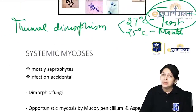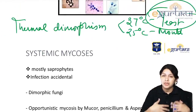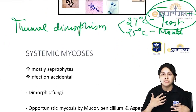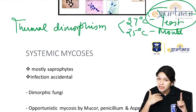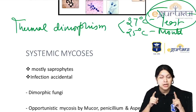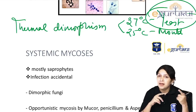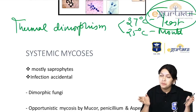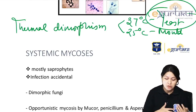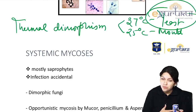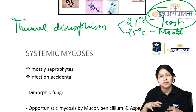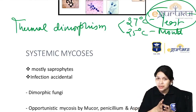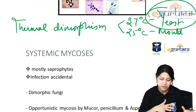Most dimorphic infections are acquired by inhalation, except Sporothrix schenckii. These fungi are confined to a particular geographical area, so they are also termed endemic mycoses. Different names are given according to their geographical area.